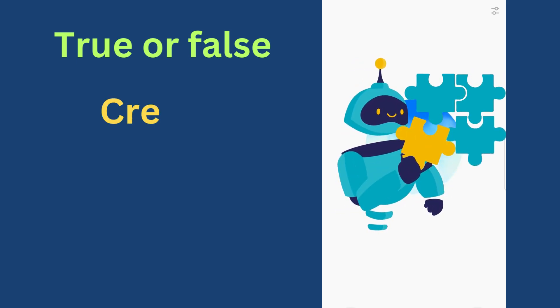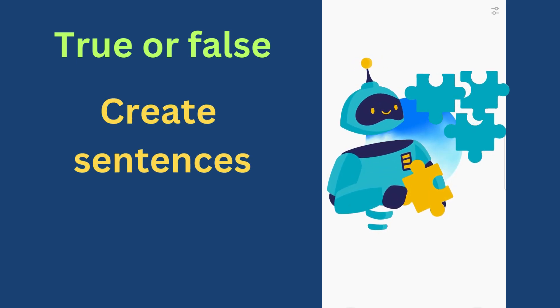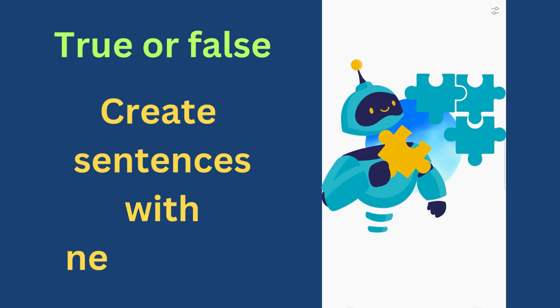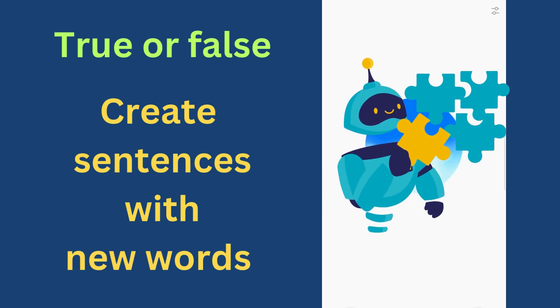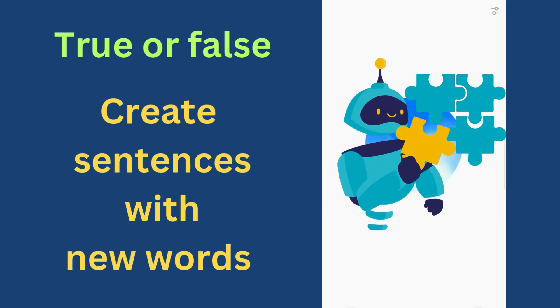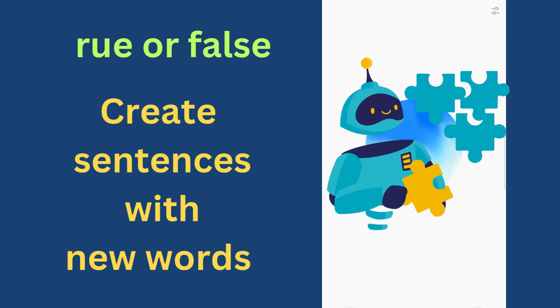Create sentences using the present simple tense with the words provided. A: She slash read slash book.